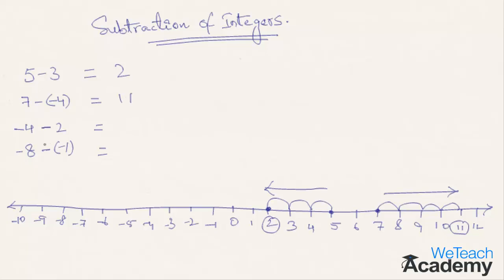Now let's proceed with a more advanced example: subtracting minus 4 minus 2, i.e., -4-2. In this case, let's first mark -4 on the number line and then move two steps towards the left, passing -5 and stopping at -6. So the answer is -6. Since you are subtracting a positive number, you are moving towards the left.